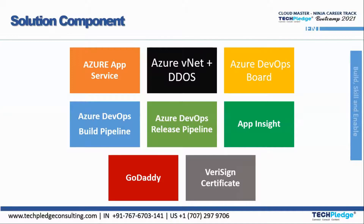Azure Pipeline is a cloud service used to build and test code projects automatically. It supports continuous integration and continuous delivery to regularly and consistently test, build, and ship code to any target. With the release pipeline, you can create releases, manage versions, and roll back to previous releases.